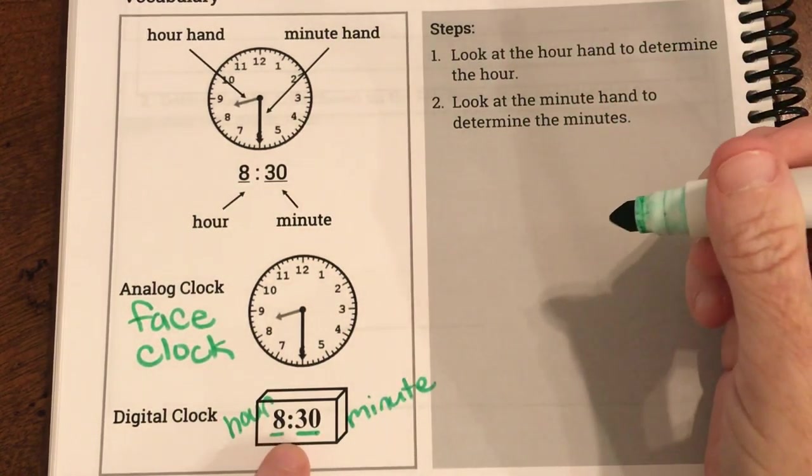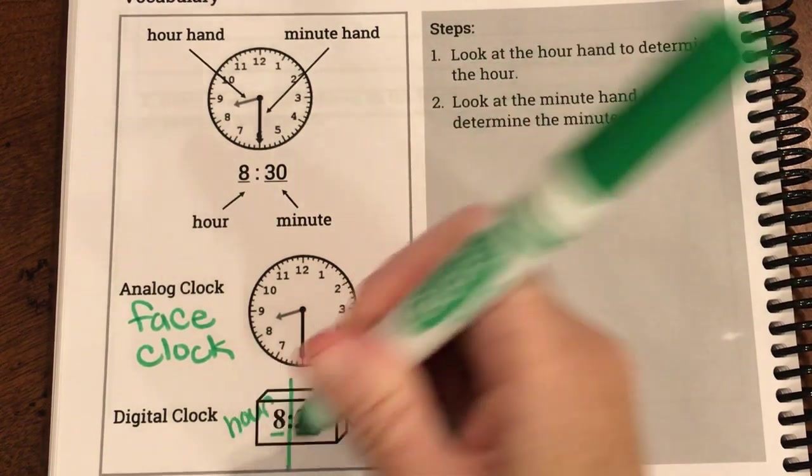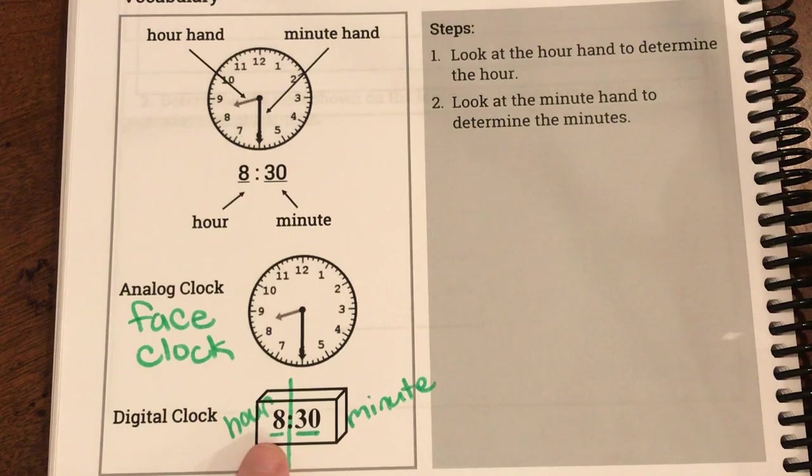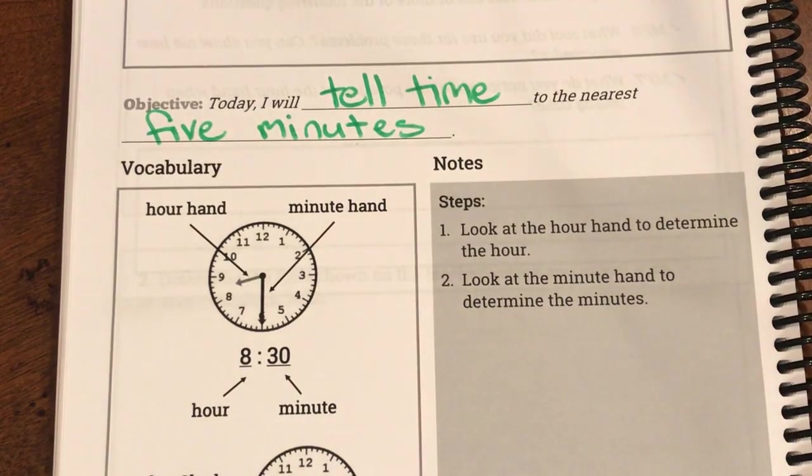And what this colon, these two dots does is it kind of splits it in half. So that's how I read it: 8:30. So that one's pretty easy but when we get to the face clock or the analog clock it's a little bit trickier. So there's some things we have to know.